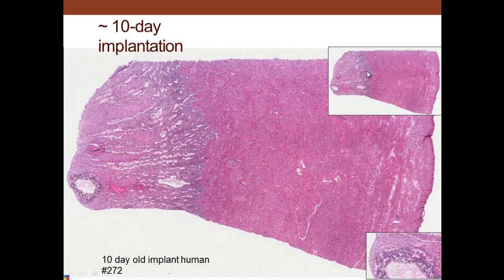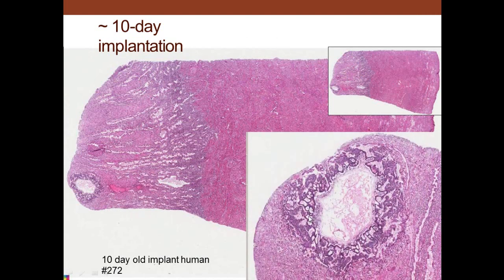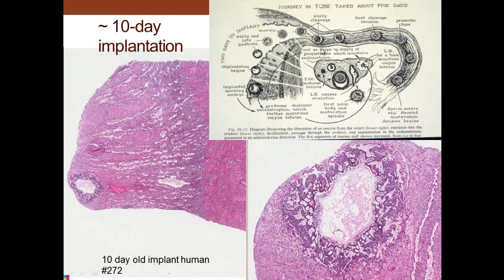Here is a 10-day implantation; we don't see the fetus itself but we can see the membranes of the fetus attaching in the functional layer of the endometrium. To summarize: you have the infundibulum with the fimbria, then the ampulla, and the isthmus — which is where fertilization occurs. Then the embryo moves into the uterus, is implanted, and you have the decidual reaction to prevent continued invasion while the spiraling arteries provide nutrients for the developing fetus.